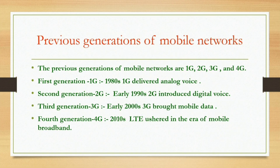Before 5G, we had previous generation mobile networks: 1G, 2G, 3G, and 4G. The first generation, 1G, was from the 1980s and it delivered analog voice communication.